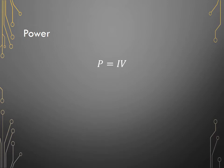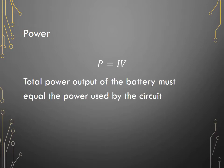Power equals current times voltage. So that will give you the power output of, say, a battery. The total power output of the battery must equal the power used by the rest of the circuit. So we'll get to applying this particular equation to circuit elements later.